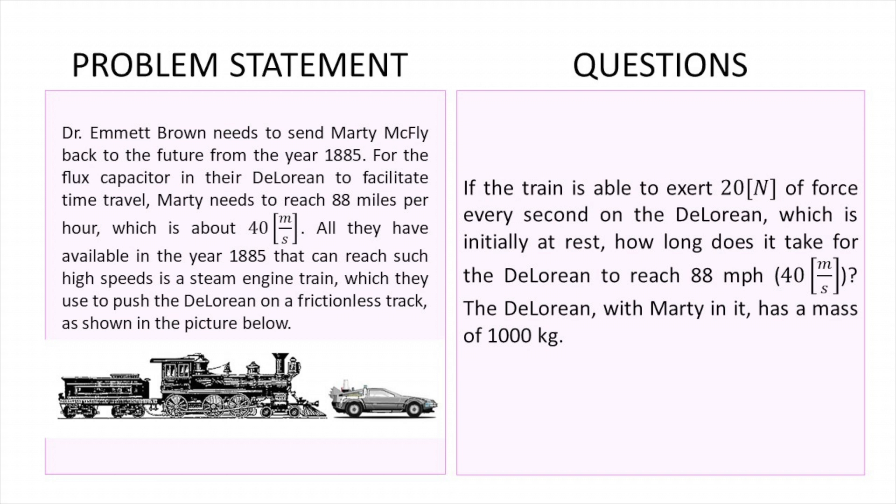The question is: if the train is able to exert 20 N of force every second on the DeLorean, which is initially at rest, how long does it take for the DeLorean to reach 40 meters per second? The DeLorean with the boy in it has a mass of 1,000 kilograms.